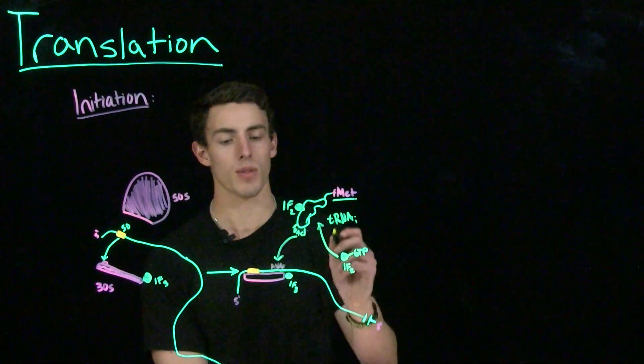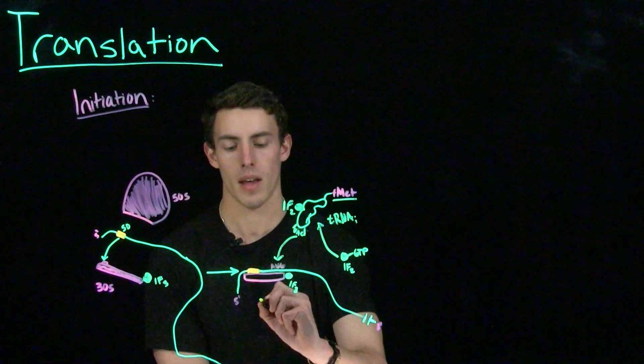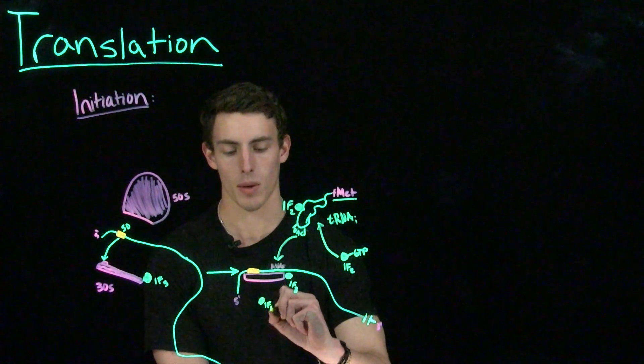As our initiator tRNA is moving towards binding to the start codon, IF1 is also going to bind to the small subunit.